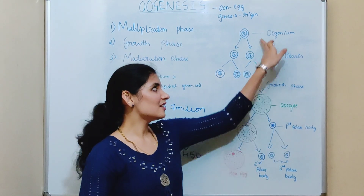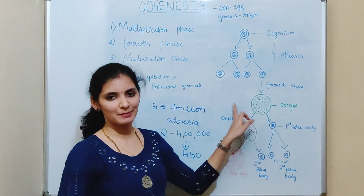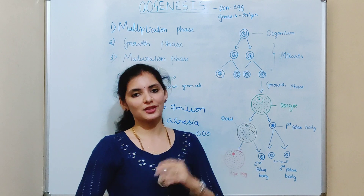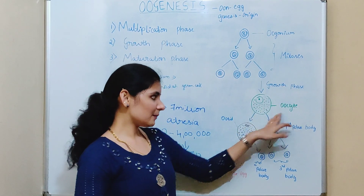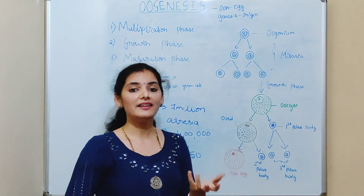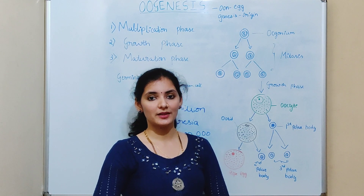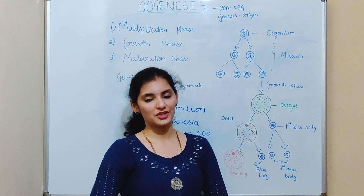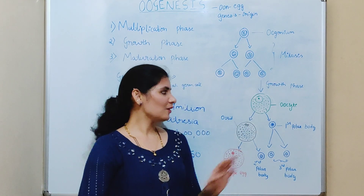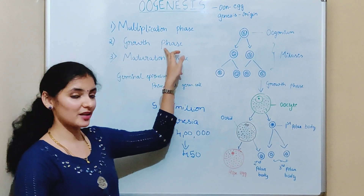During the maturation phase, the oogonium undergoes mitotic division and produces primary oocytes. This primary oocyte then undergoes meiotic division, but is arrested in meiosis one until the female reaches puberty. Once the female reaches puberty, a day before ovulation, meiosis one division will be completed. The primary follicle then undergoes the second phase known as the growth phase.